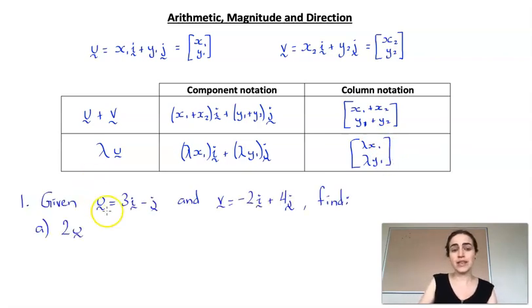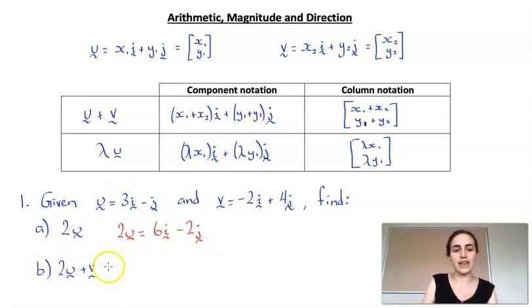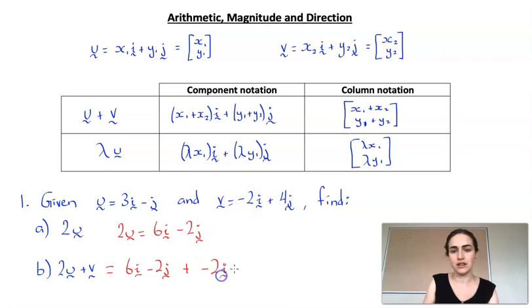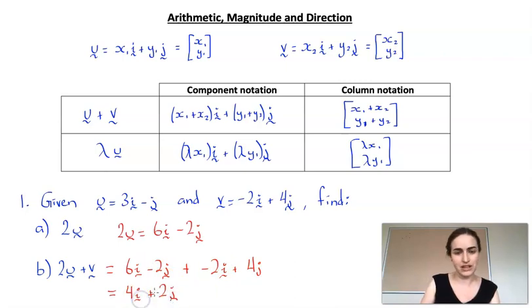Let's look at an example. We're given two vectors u and v, and the first thing we're asked to find is 2u. So 2u equals: we multiply the 3 first, giving 6i, minus — we've got a minus one out the front multiplied by two — so minus 2j. Part b asks us to find 2u plus v. Rewriting that: 6i minus 2j, plus v which was minus 2i plus 4j. Collecting like terms, putting i and j vectors together: 6 minus 2 gives 4i, and minus 2 plus 4 gives plus 2j.